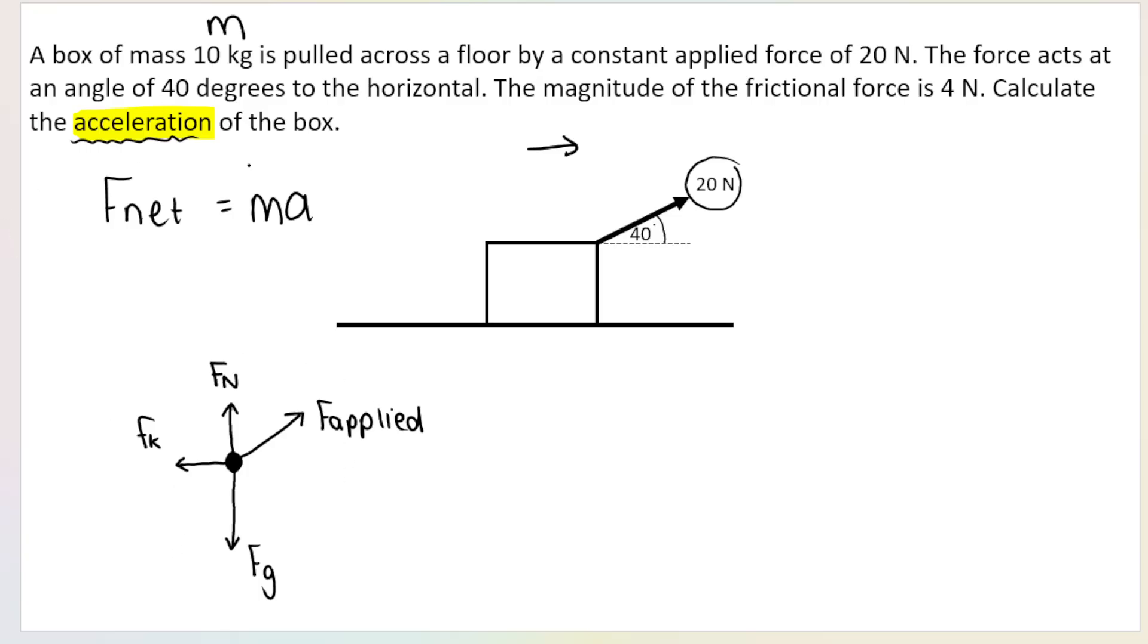Now, if the question asked you to draw and label a free body diagram for marks, this is where you would stop and you would get one mark for every force. So this would be a four mark diagram. However, the question didn't ask me for a free body diagram. I'm doing it for rough to help me with my calculations. Now, as soon as you see a force acting at an angle, so in this case, the applied force is acting at an angle. I know that I can break that force up into components.